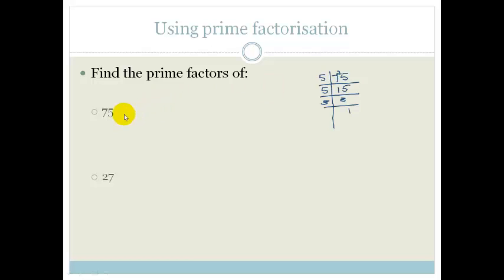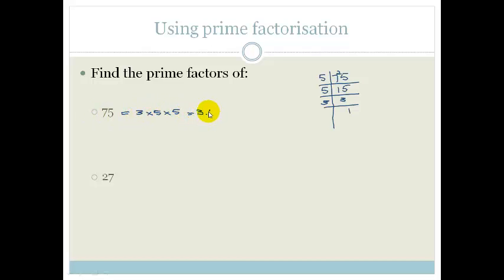So we can say that 75 is made up of 3 times 5 times 5. That's how you find your prime factors of a number, which could be rewritten as 3 times 5 squared.